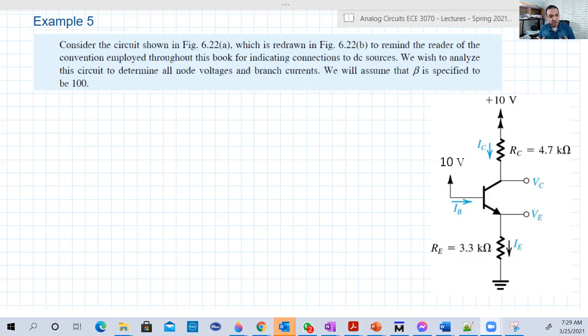Last time we saw a circuit working in the active region, which is practically this circuit here, exactly the same circuit. But I just changed the node voltage, the base voltage from 4 to 10 volts. With 4 volts we solved the example last lecture and found it was working in the active region and everything was fine. Now let's see what's going to happen if we increase the base voltage to 10.